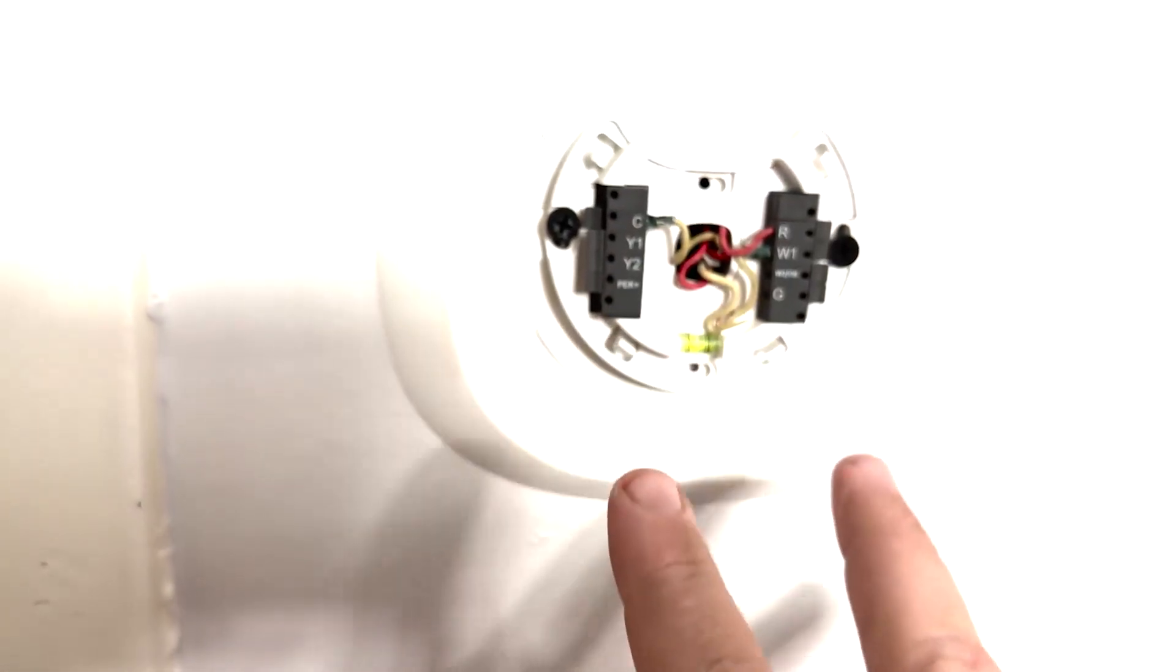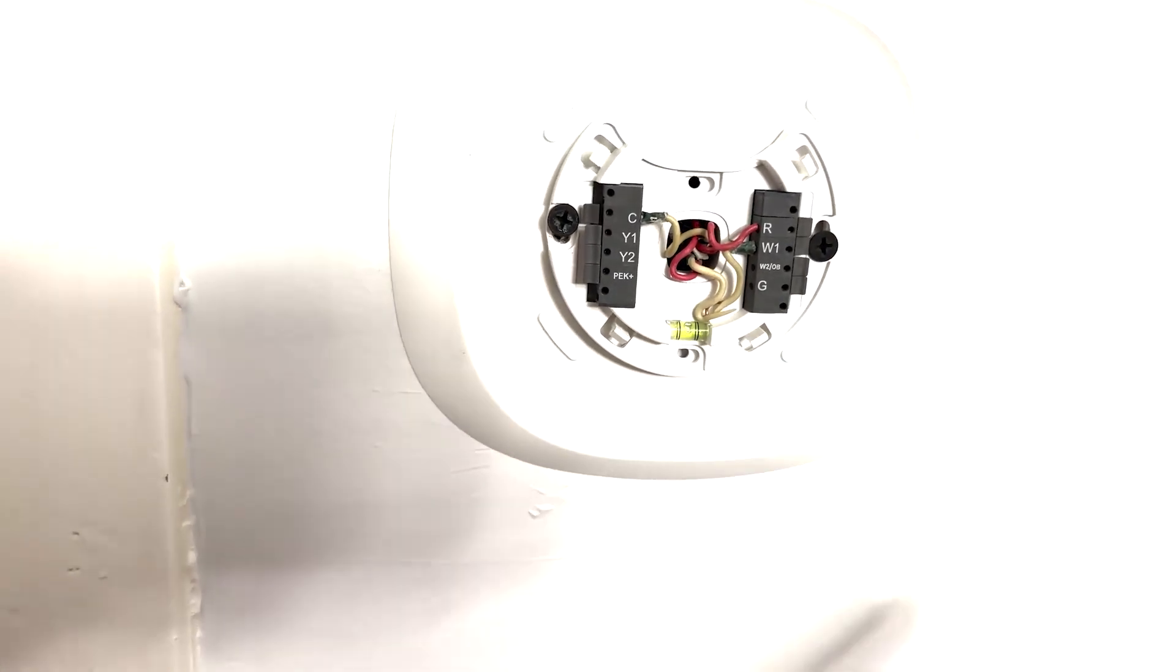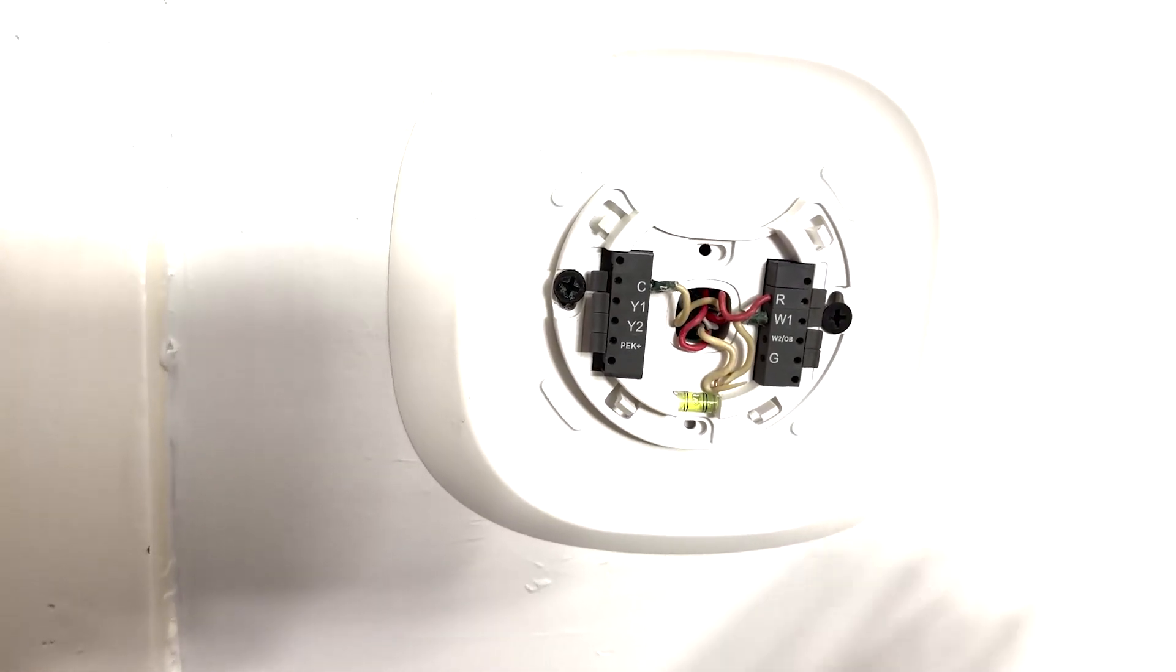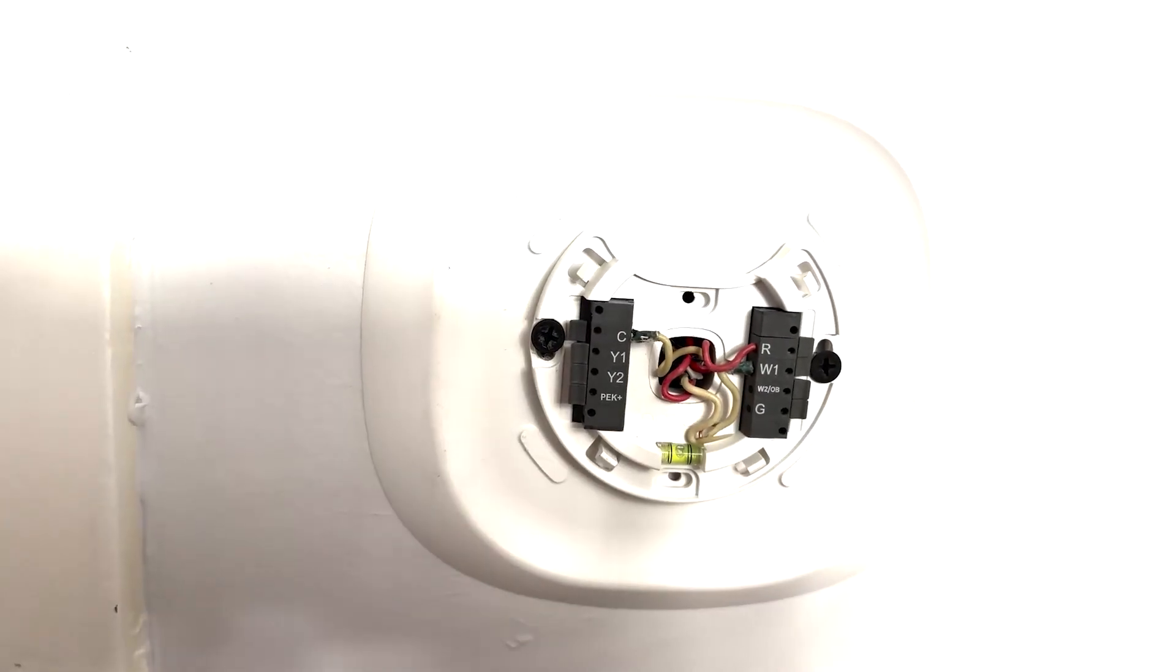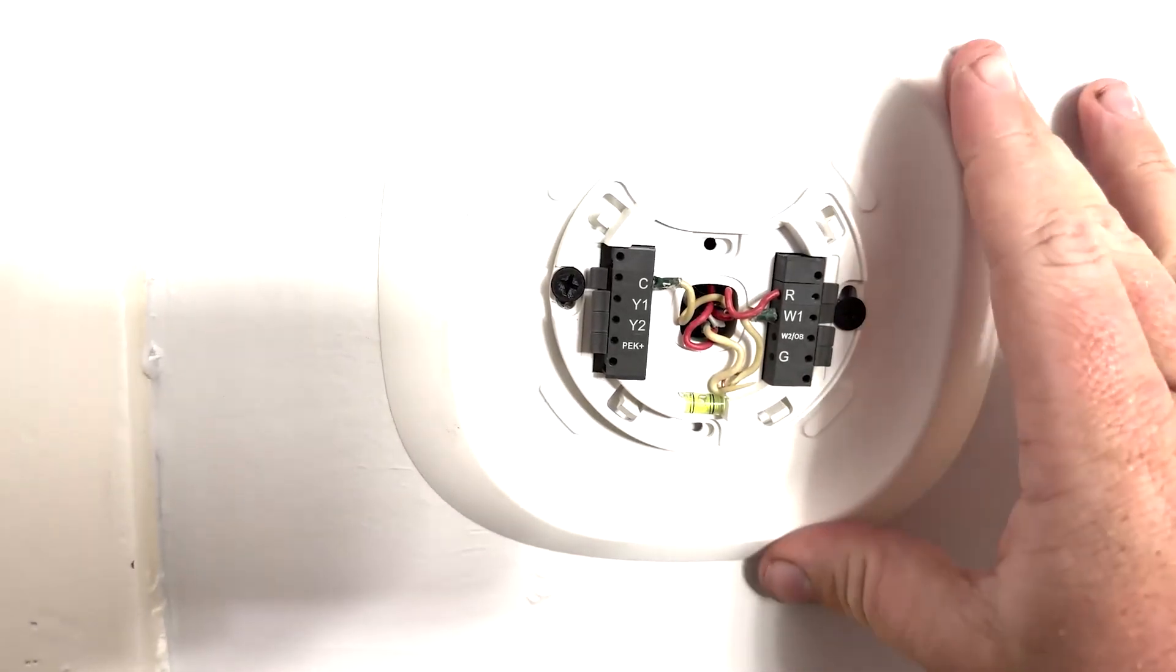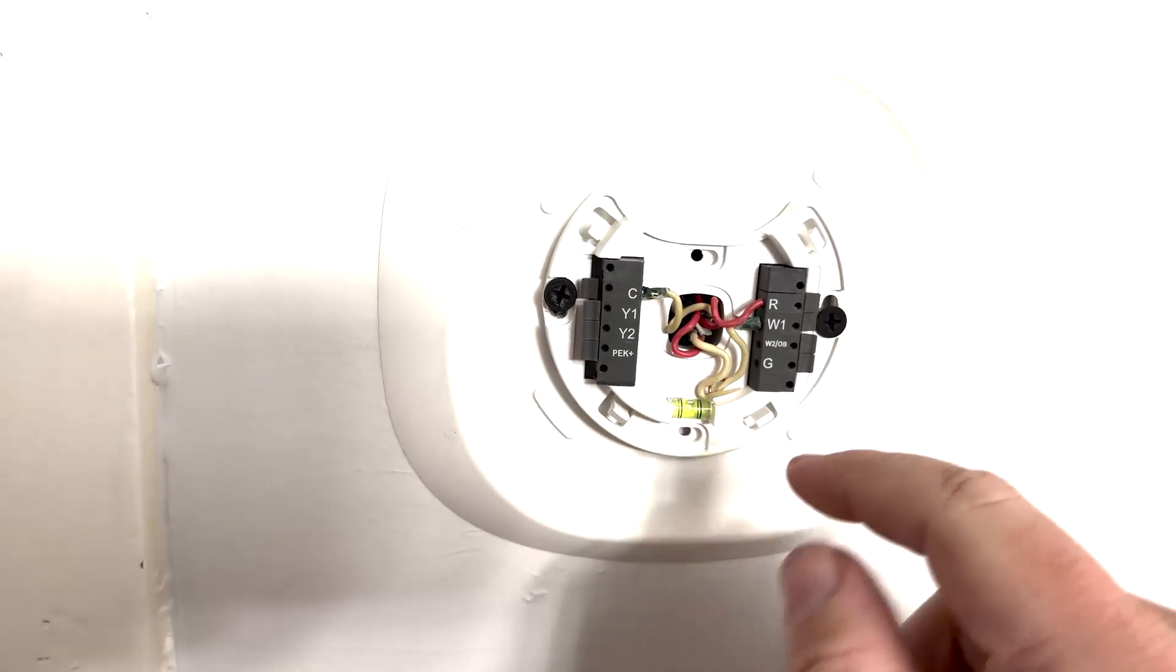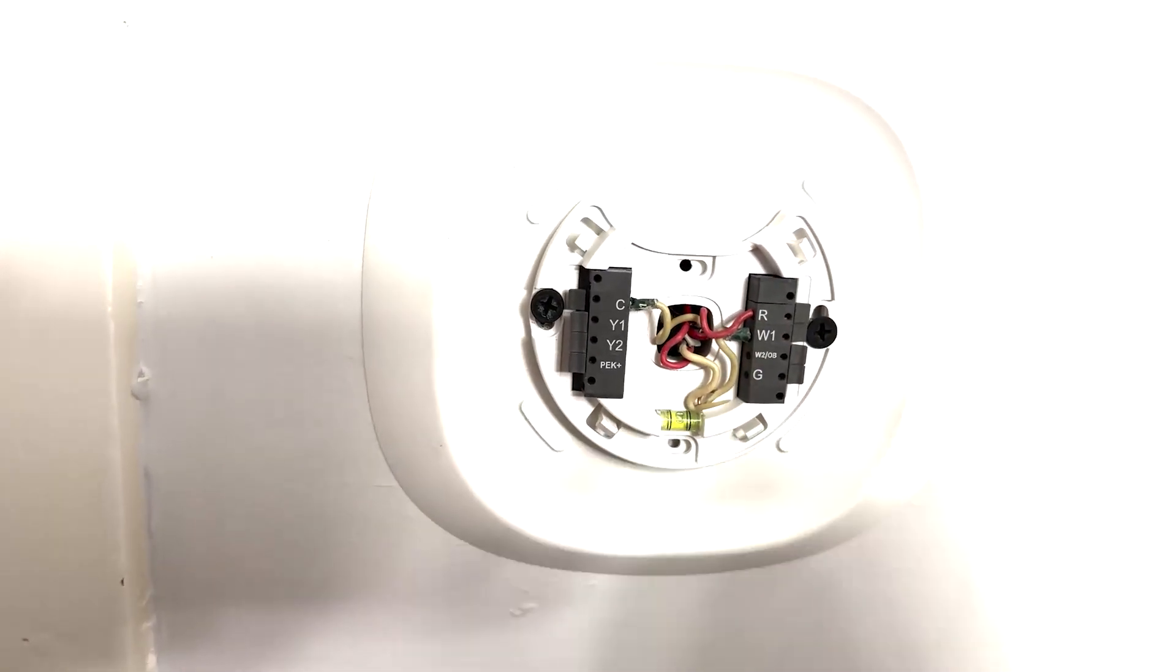Now this system here is different than what you would typically see because this is going to be with a very old Aquastat from Honeywell from way back when. So basically you're going to get the thermostat, the plate, and the connector. I'll explain the wiring shortly after the next segment.